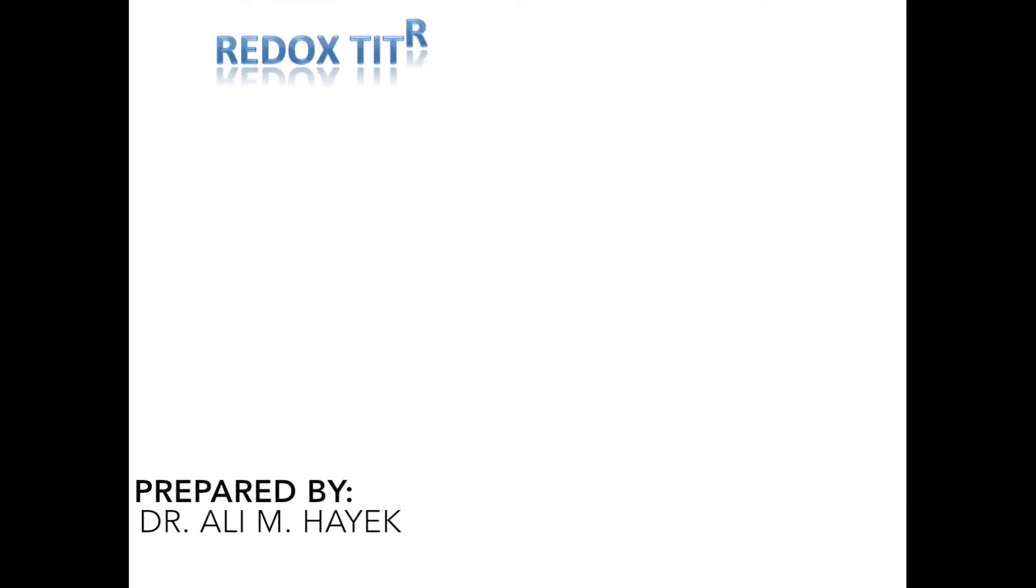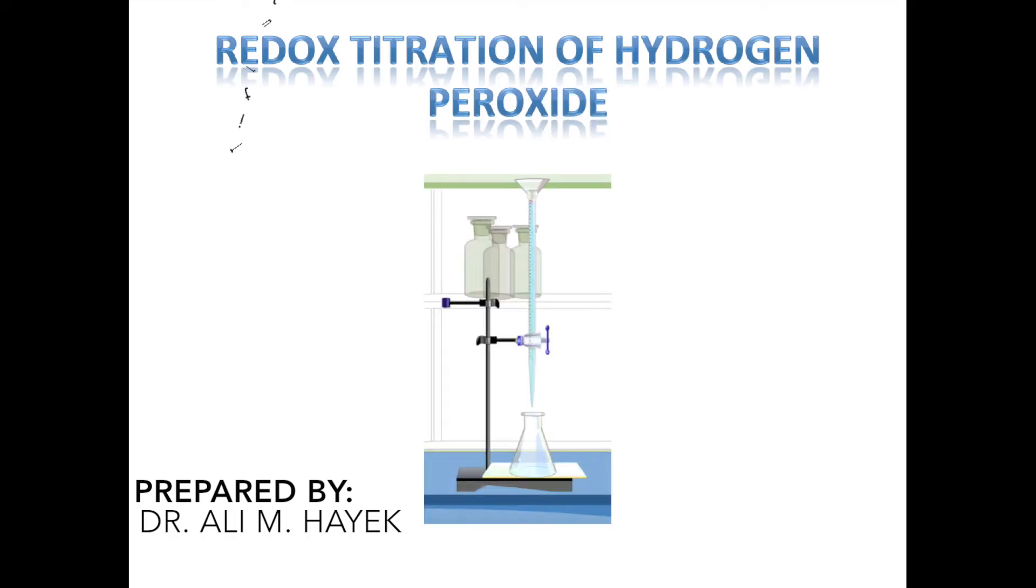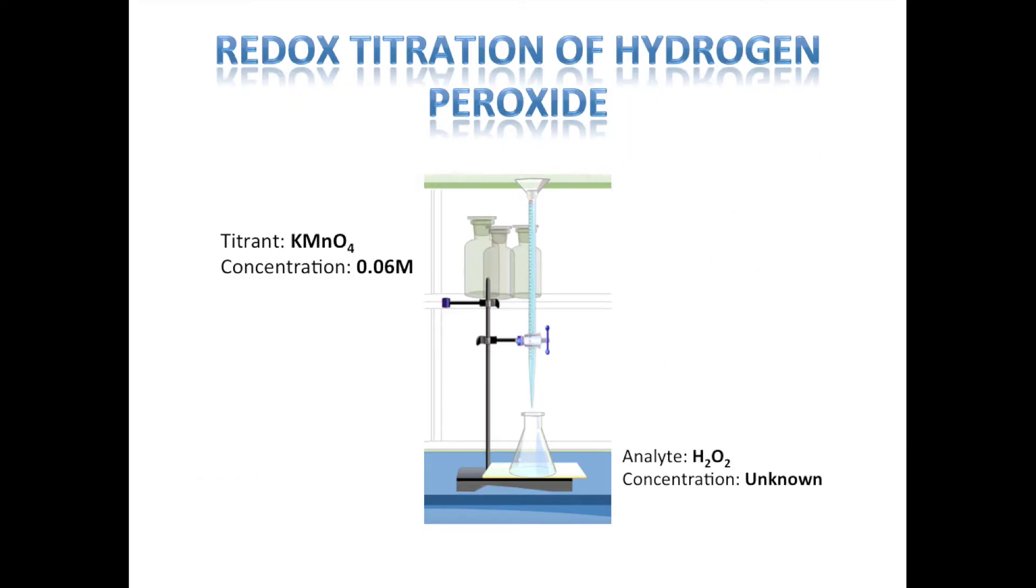This experiment is about redox titration of hydrogen peroxide by potassium permanganate. The titrant is potassium permanganate with a concentration of 0.06 molar and the analyte is hydrogen peroxide.